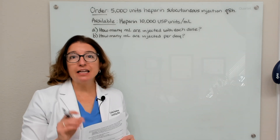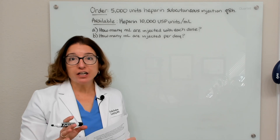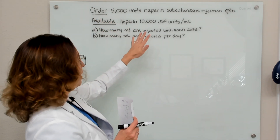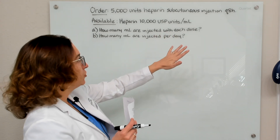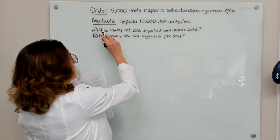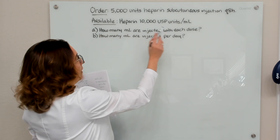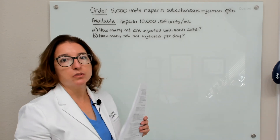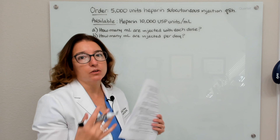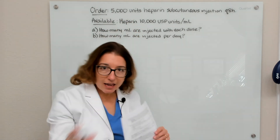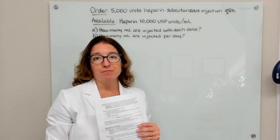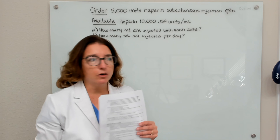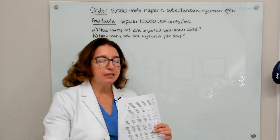Now let's work through the second example problem involving an injectable medication. This is an order for heparin: 5,000 units subcutaneous injection Q8H, meaning every eight hours. What is available is heparin 10,000 units per ml. Don't be alarmed by a different unit of measure — units are handled exactly the same way as milligrams. We set up the equations the same way and solve the same way. The same applies to milliequivalents, micrograms, or other units.